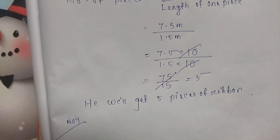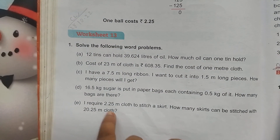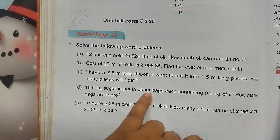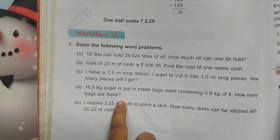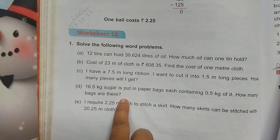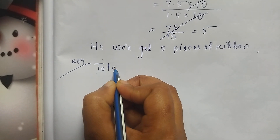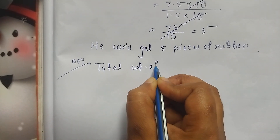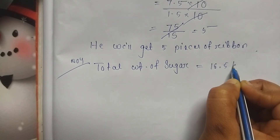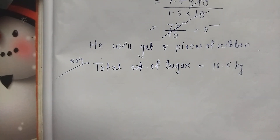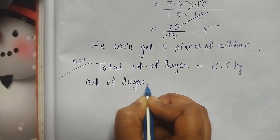Now I solve question number 4. 16.5 kilograms of sugar is put into paper bags, each containing 0.5 kilograms. How many bags are there? First I write: total weight of sugar equals 16.5 kilograms.